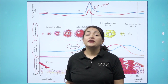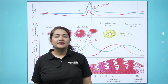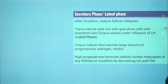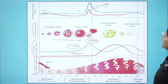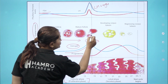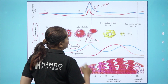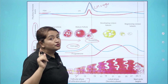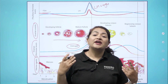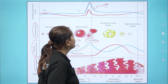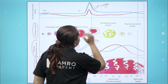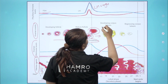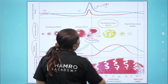After the follicular phase, the luteal or secretory phase begins. After ovulation, the remnants of the ruptured follicle form the corpus luteum — also called the yellow body — which secretes hormones to support the next stage of the cycle.